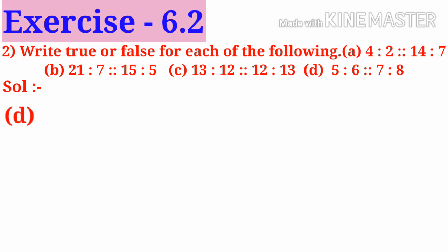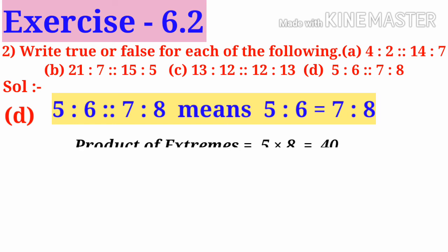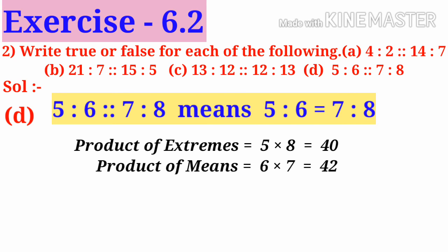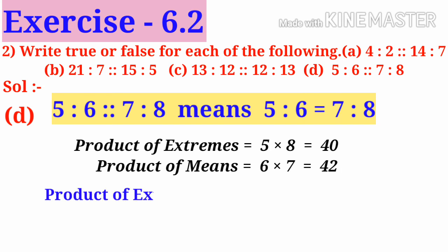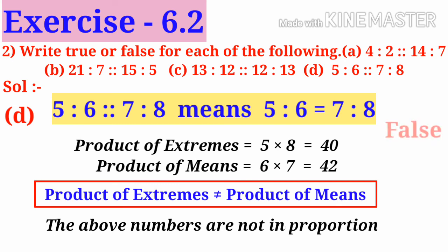So the above statement is false. D: 5 is to 6 is as 7 is to 8, meaning 5 is to 6 is equal to 7 is to 8. Take the extreme numbers 5 and 8. Take the product: 5 into 8 is 40. And take the product of the middle terms 6 and 7: 6 into 7 is 42. Both values are not equal. So product of extremes is not equal to product of means. The above numbers are not in proportion, so the above statement is false.